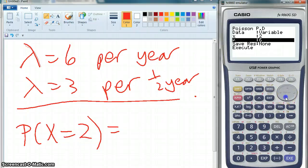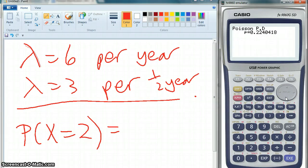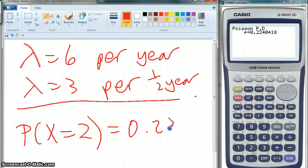So, it equals two, and my lambda is now three, because over six months, we'd expect three. And we get 0.224. And again, we can check the answer in the book, and yes, that is the same. Done.